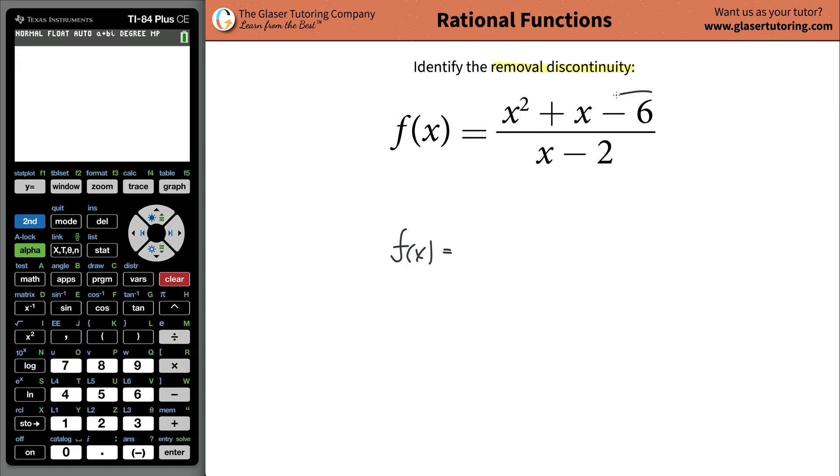So factor that numerator, you've got to find two numbers that multiply to negative 6 but yet add to a positive 1. So we're going to say, oh right, that's so simple. It's going to be x plus 3 and then x minus 2. Because the 3 and the 2, they add to a positive 1 but yet multiply to negative 6. And then in the denominator, it's x minus 2. So keep in mind also, if they're asking these questions, probably, most likely, this factor down here is going to be somehow a factor in the numerator.